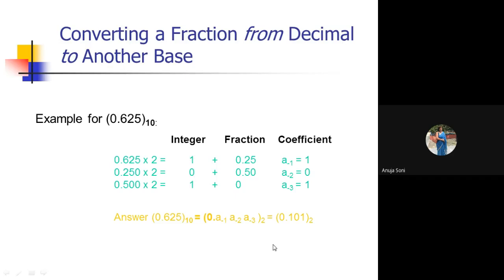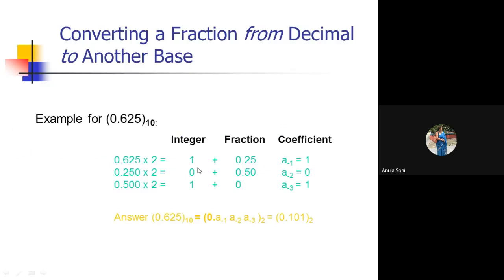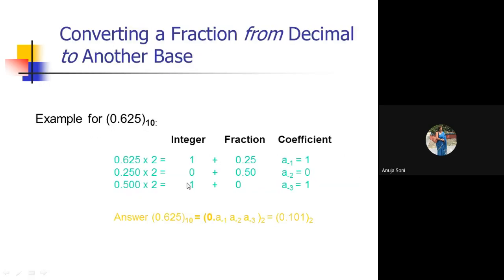Now, unlike the integral case, here in the forward direction you have to concatenate all the integer values which are generated. Because we are dealing with the fractional part, the entire value generated will be placed after the decimal point, to the right-hand side of the decimal point. So the result is 0.101 having base 2. This is the way to deal with the fractional value in Case 2.